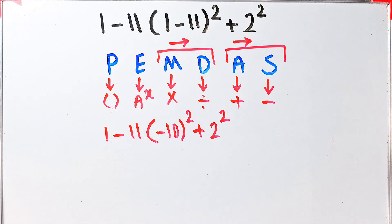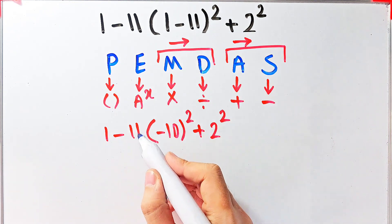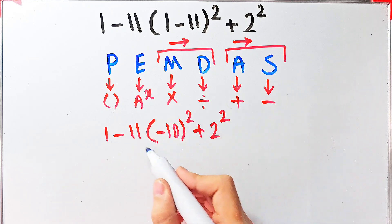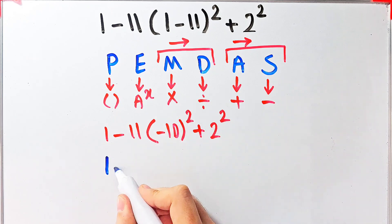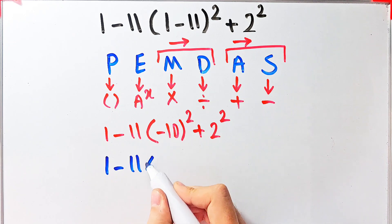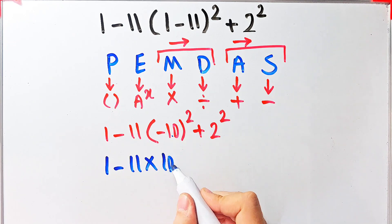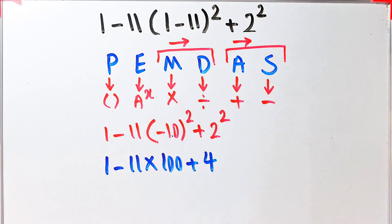Next we simplify the exponents: negative 10 to the power of 2 equals 100, and 2 to the power of 2 equals 4. Now we have 1 minus 11 times 100, plus 4.